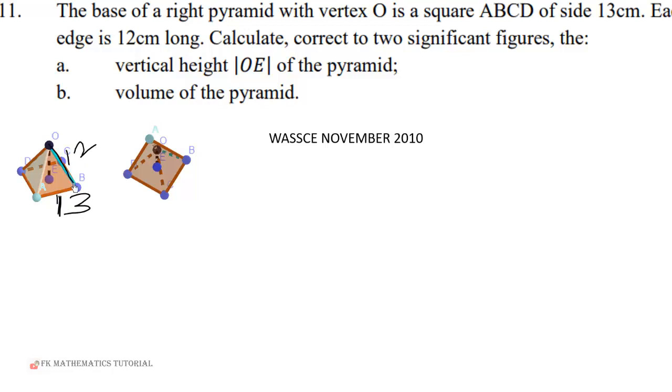We are to calculate OE. OE is part of triangle OEA, OED, OEC, or OEB. You can use any of them. Let's use OEA. Before we can find AE, we have to use the diagonal AC because AE is half of AC.